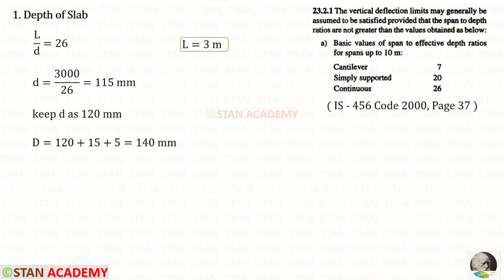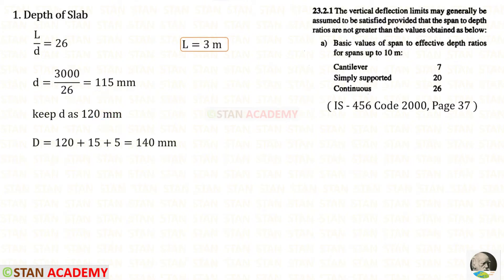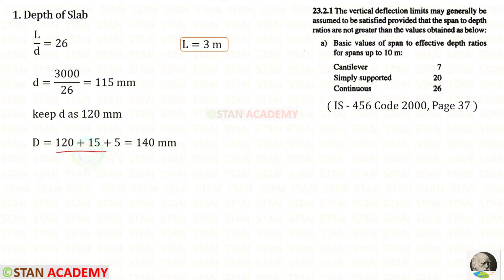Now we are going to find the effective depth and the overall depth of the slab. For a continuous slab, the span-to-depth ratio is 26. The span is 3000 mm, so dividing 3000 by 26 gives 115 mm. Rounding up to 120 mm, with an effective cover of 15 mm and main reinforcement diameter of 10 mm, adding 10/2 = 5, the overall depth D is 140 mm.